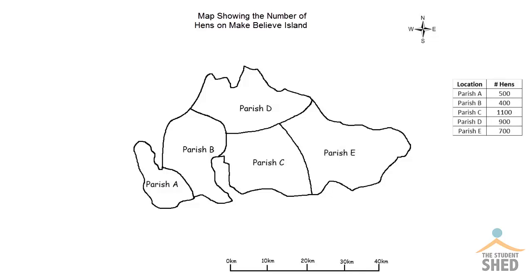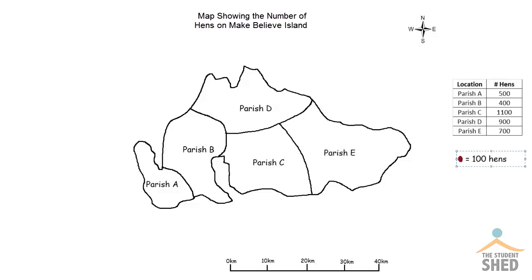On this island there's a lot of hens and farming and collecting of eggs, and the amount of hens differs depending on the parish. I've already put in place a compass and a scale, and we have the map data which tells us the location and the number of hens. I've decided I'm going to use one dot to represent 100 hens.